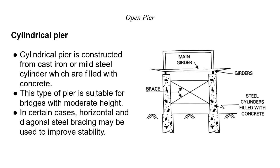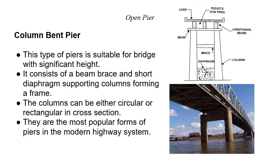Steel cylinders are filled with concrete. The main girders and bracings form the structural framework. Column Bend and Pile Bend are types of open piers.